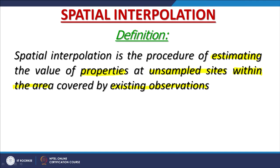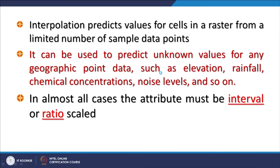Spatial interpolation is the mathematical procedure of estimating the values of properties — these properties can be elevation, pH value, or concentration of pollutants — for unsampled sites within the input data extent. Interpolation predicts values for cells in a raster from a limited number of sample data points. The input data is point data, which is a vector or discrete entity, and when we create a surface using spatial interpolation, we are creating a raster. In that way, it also converts your vector to raster.